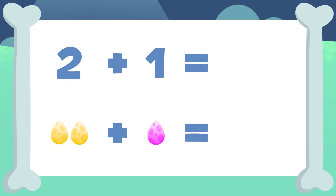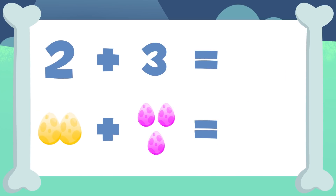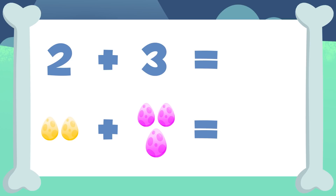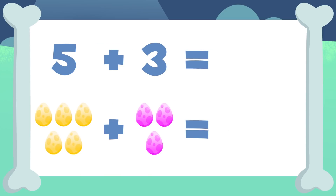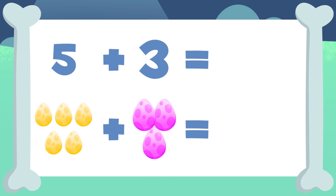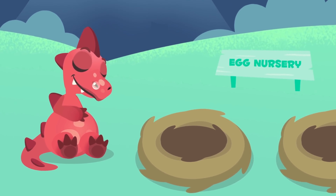Pay attention: two plus one equals one, two, and three — two plus one equals three. Very well! Let's do the next one: two plus three equals one, two, three, four, and five — two plus three equals five. Way to go! Let's do another one: five plus three equals one, two, three, four, five, six, seven, and eight — five plus three equals eight. So good!